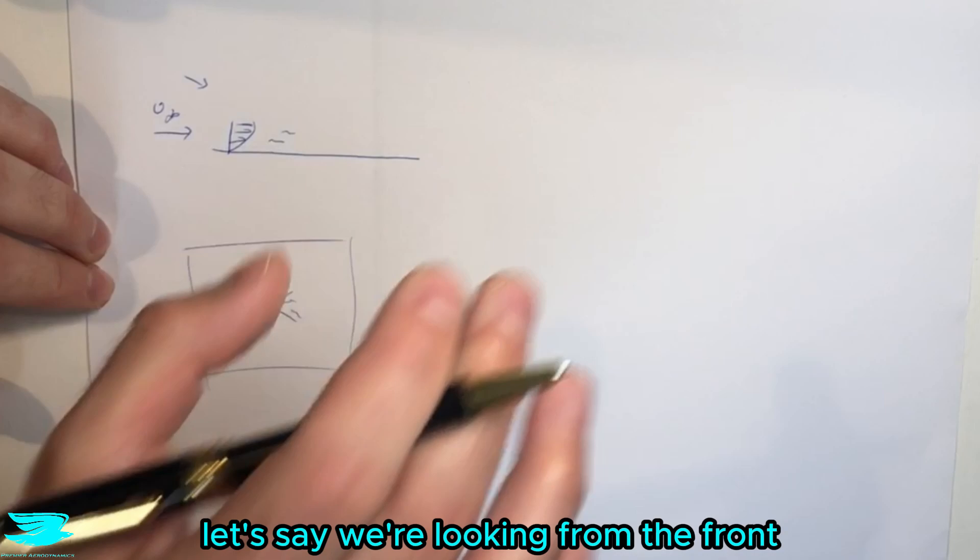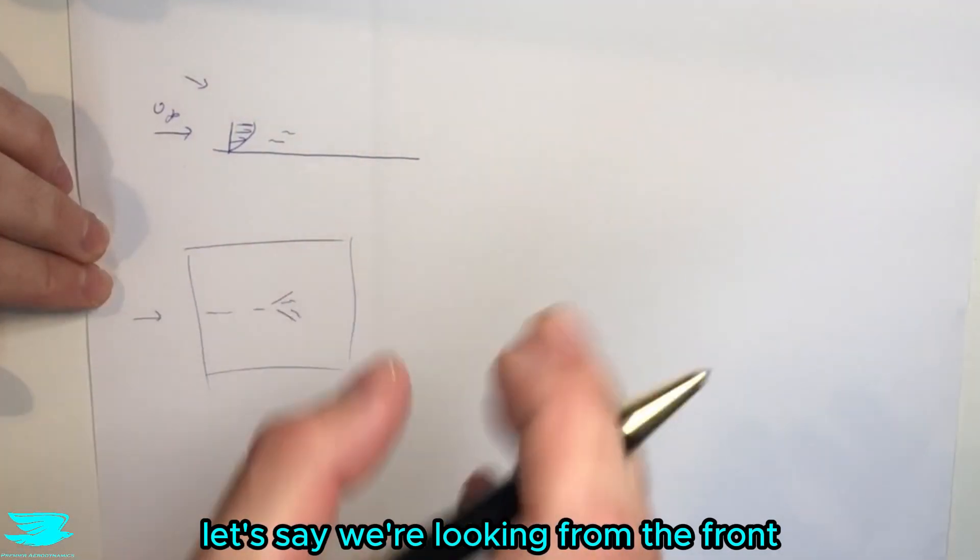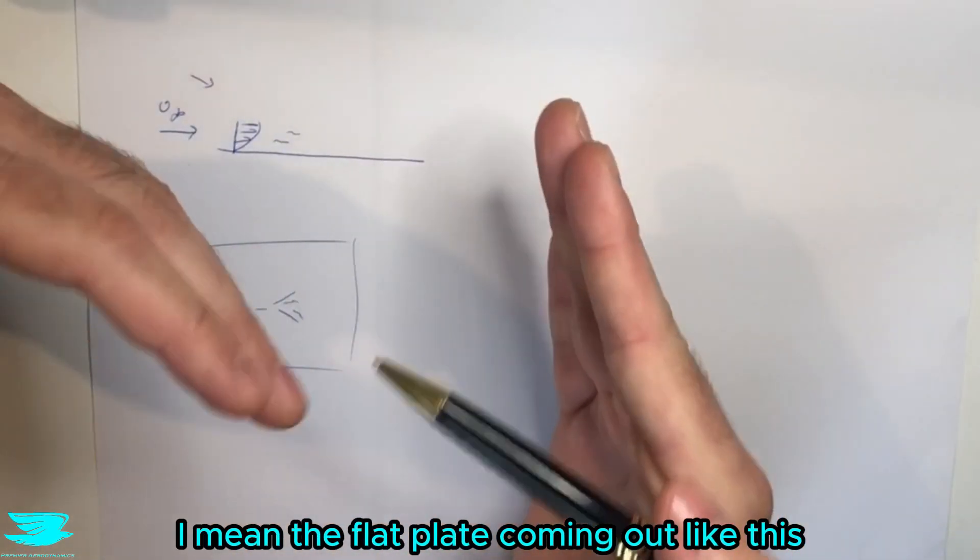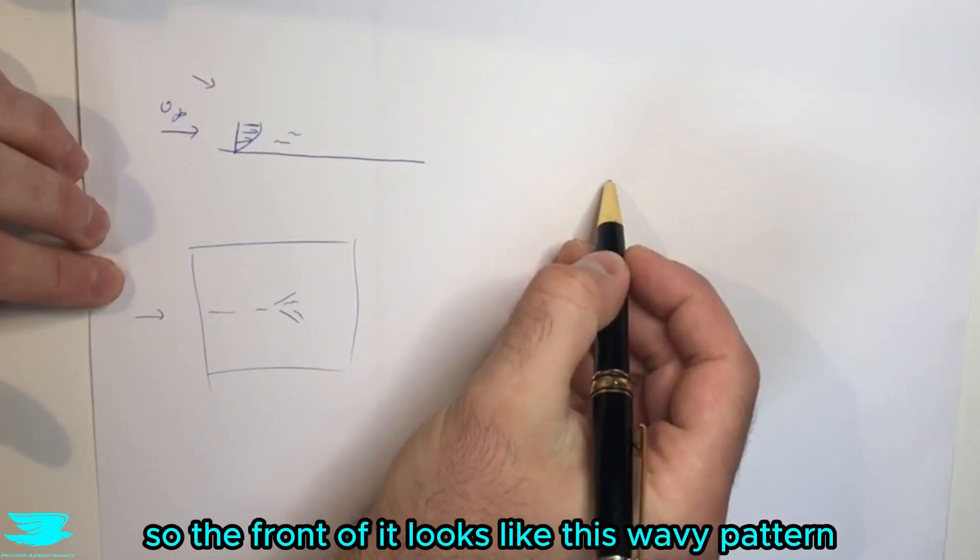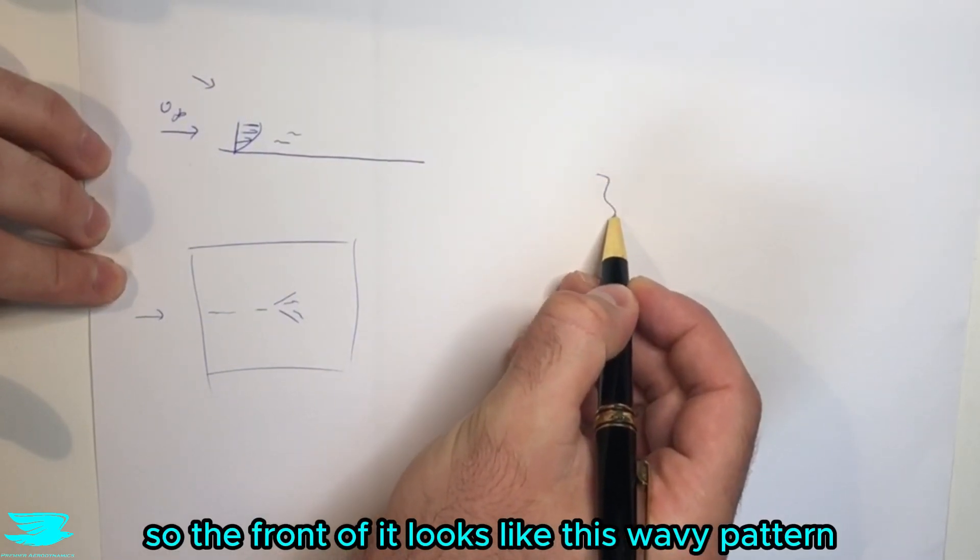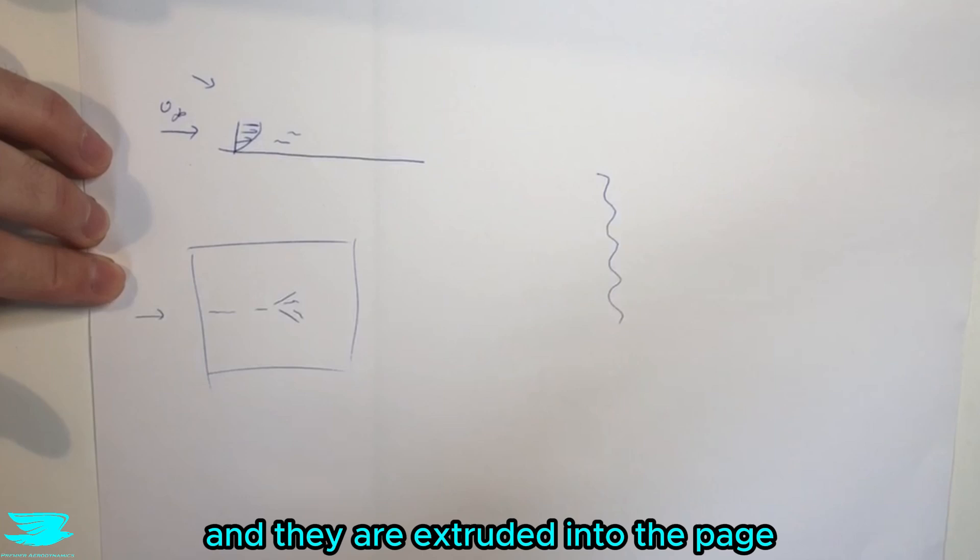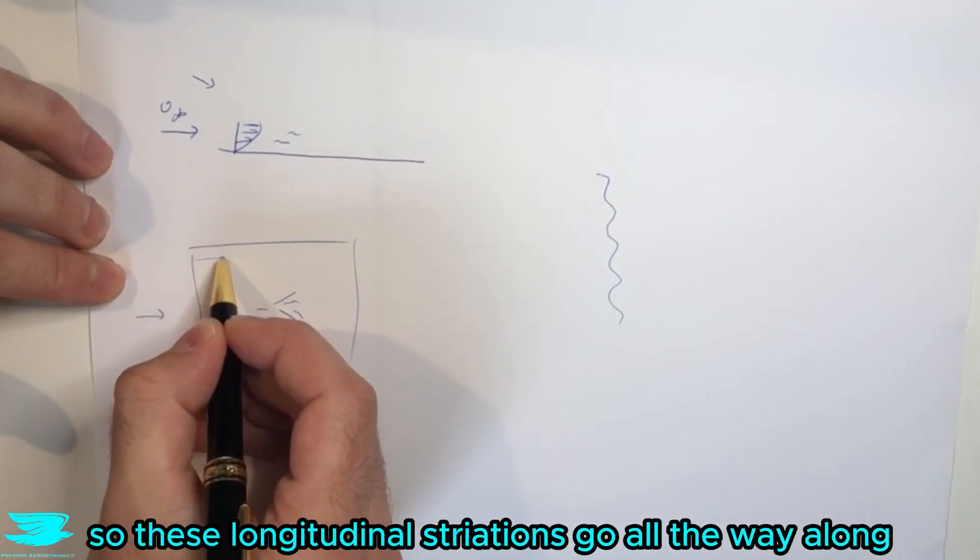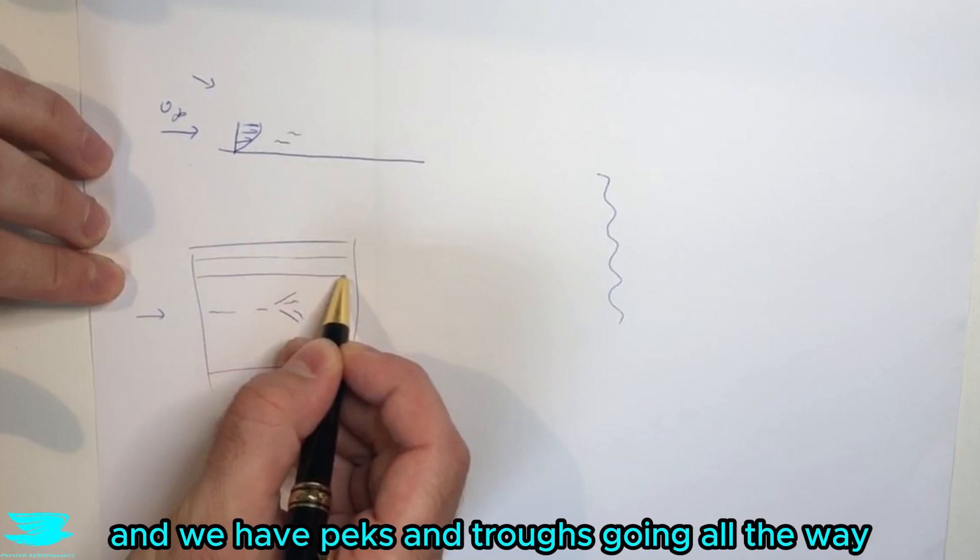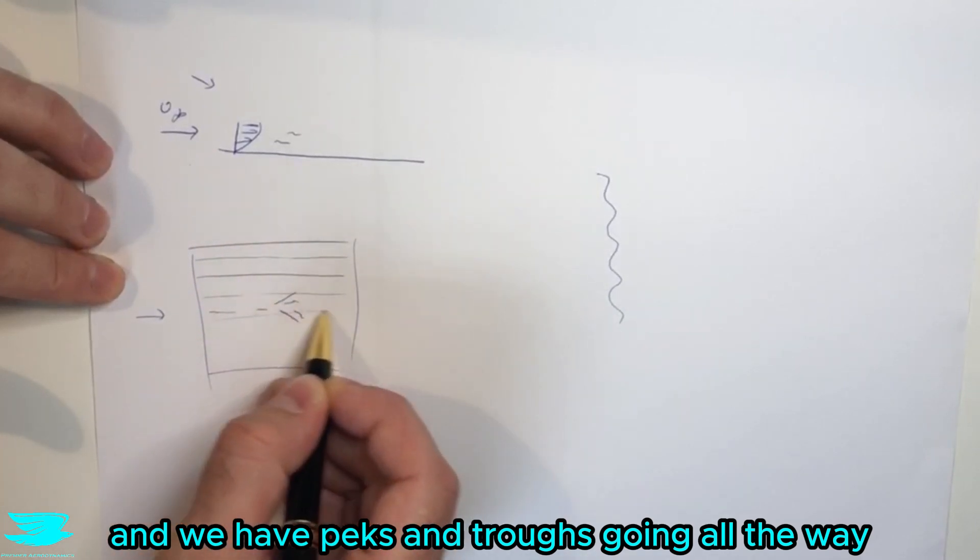So the way it looks is let's say we're looking from the front, so we're looking down into the page and we have a flat plate coming out like this. So the front of it looks like this wavy pattern and they are extruded into the page. So these longitudinal striations go all the way along and we have peaks and troughs going all the way.